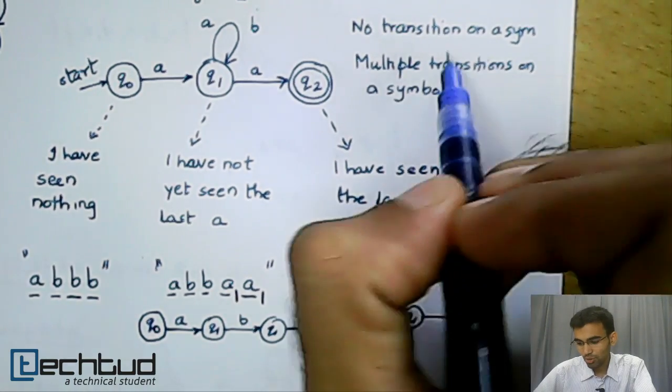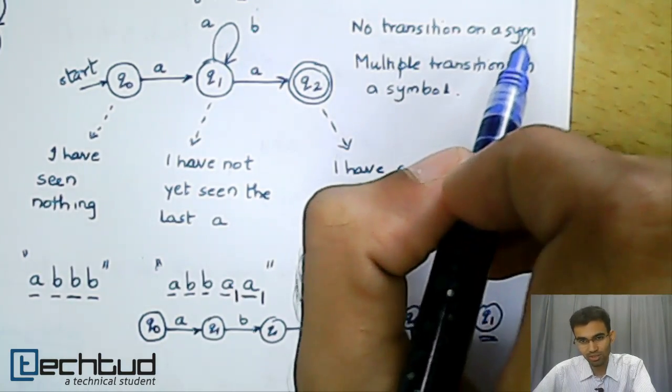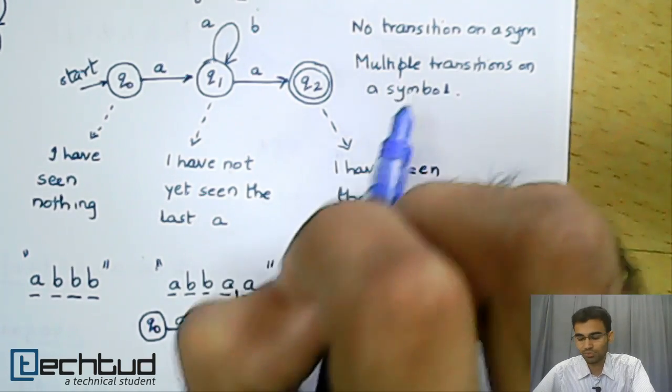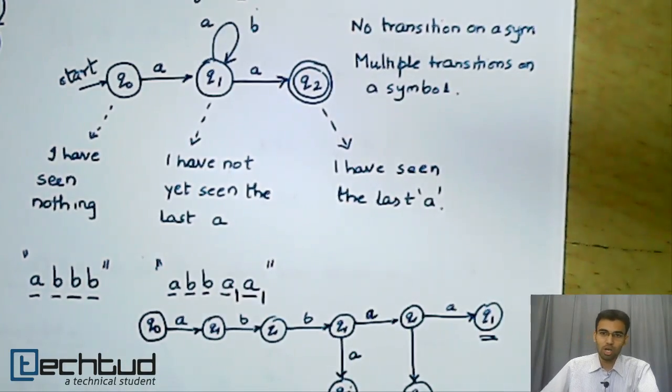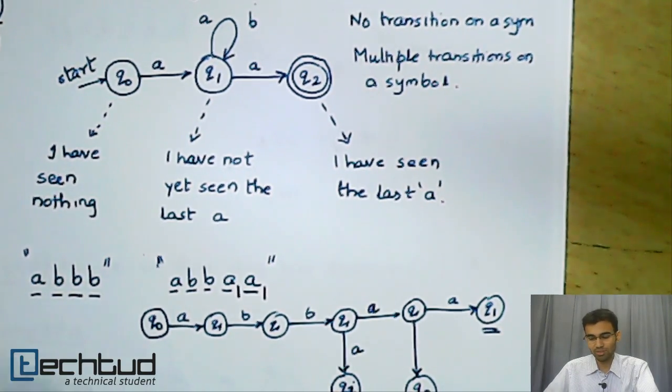However, for a DFA, you have to have exactly one transition on a symbol. You cannot have multiple. This is the difference between an NFA and a DFA. Also, the acceptance of a string, the criteria for accepting a string is different.